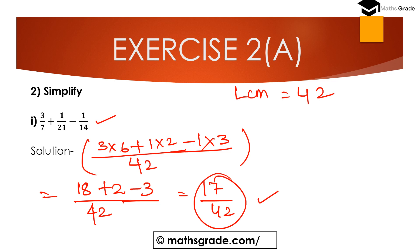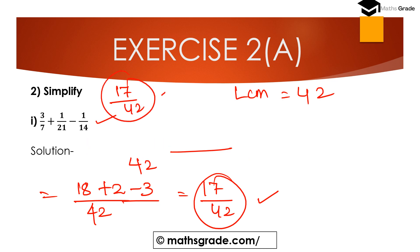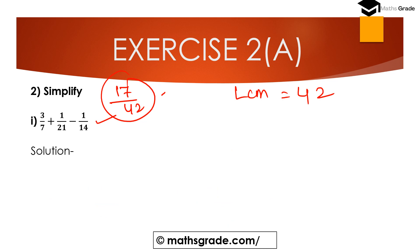This is one method and the second method will be: you can convert each fraction into an equivalent fraction. Here 17 divided by 42 is equal to this, so both methods give the same result. First convert each fraction into an equivalent fraction.